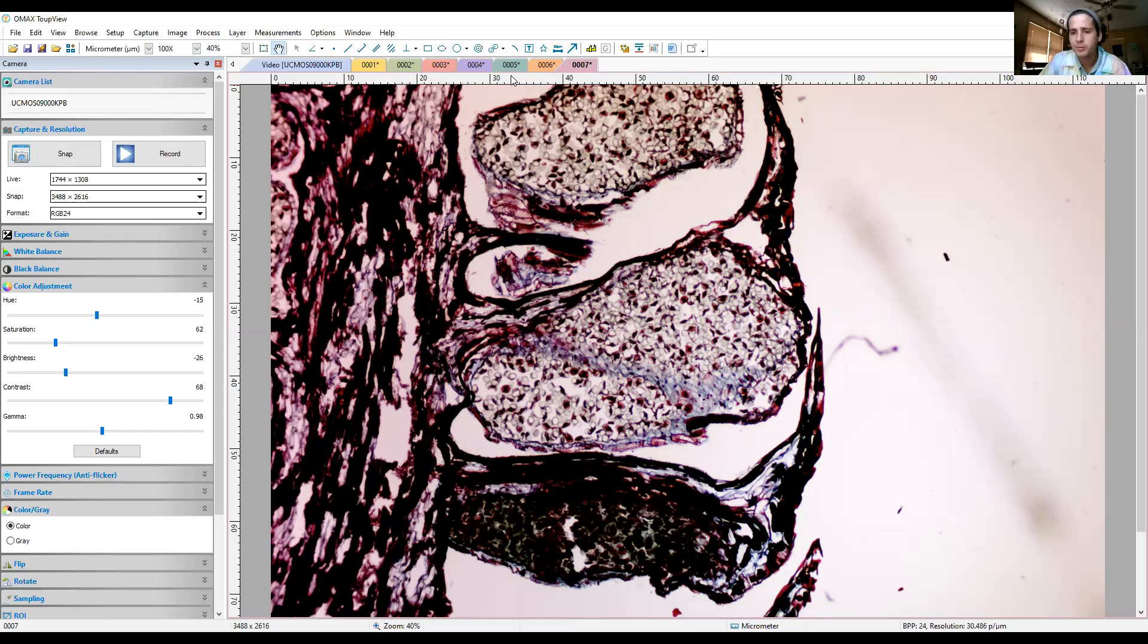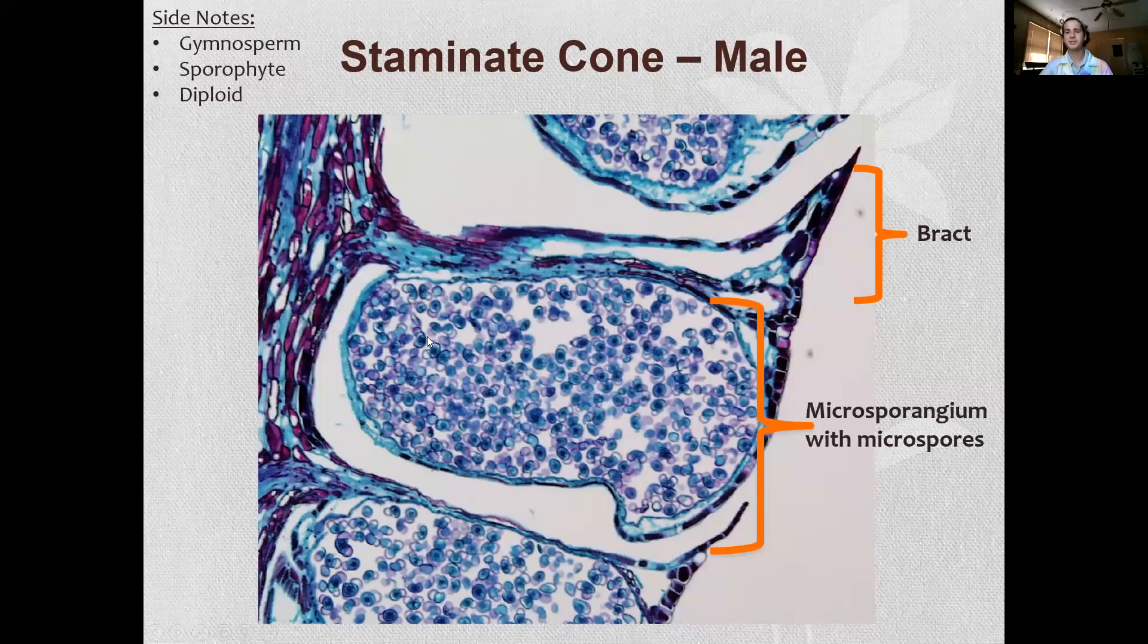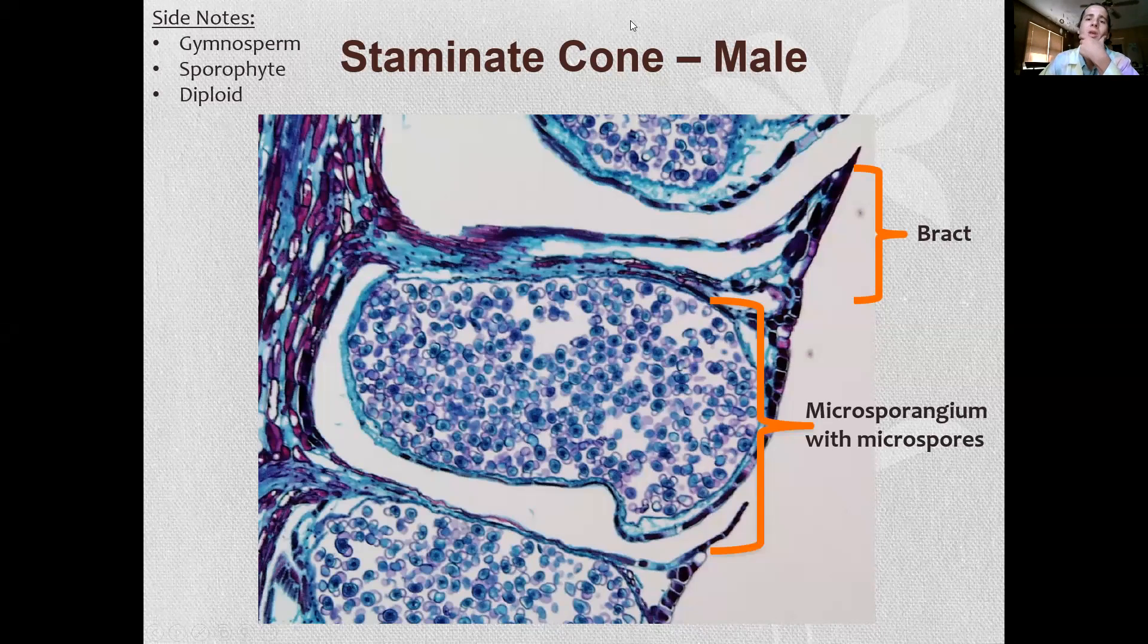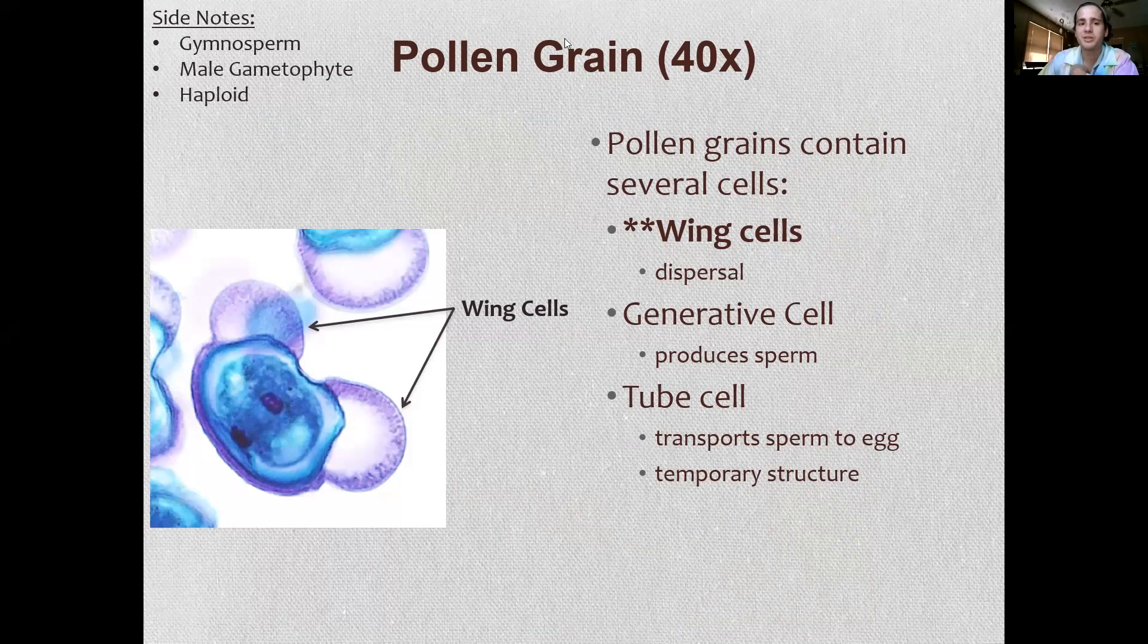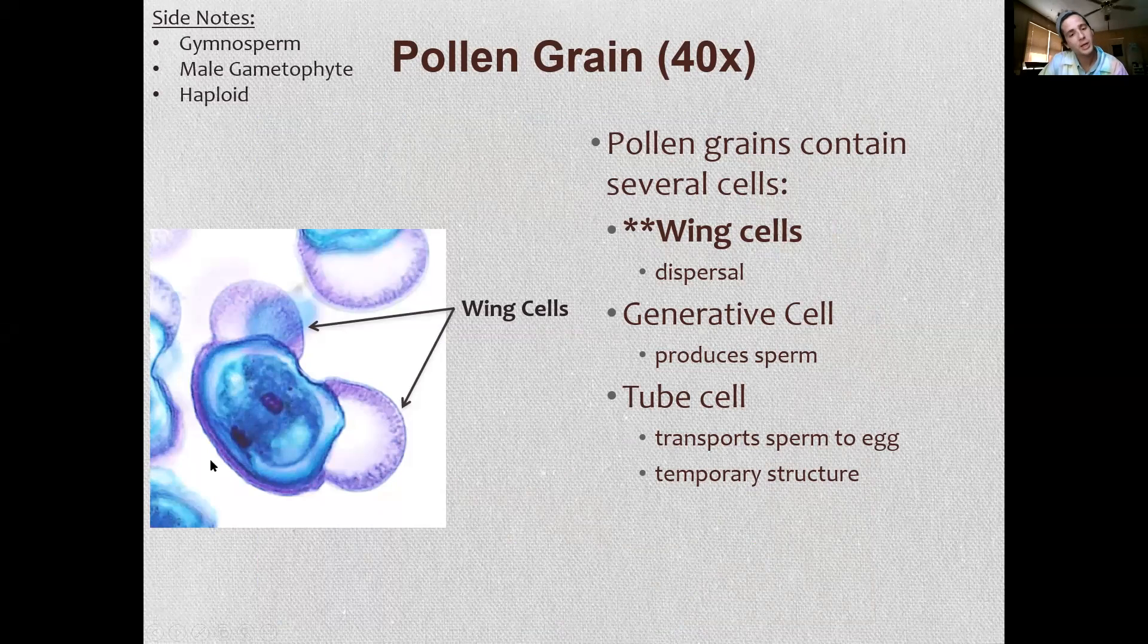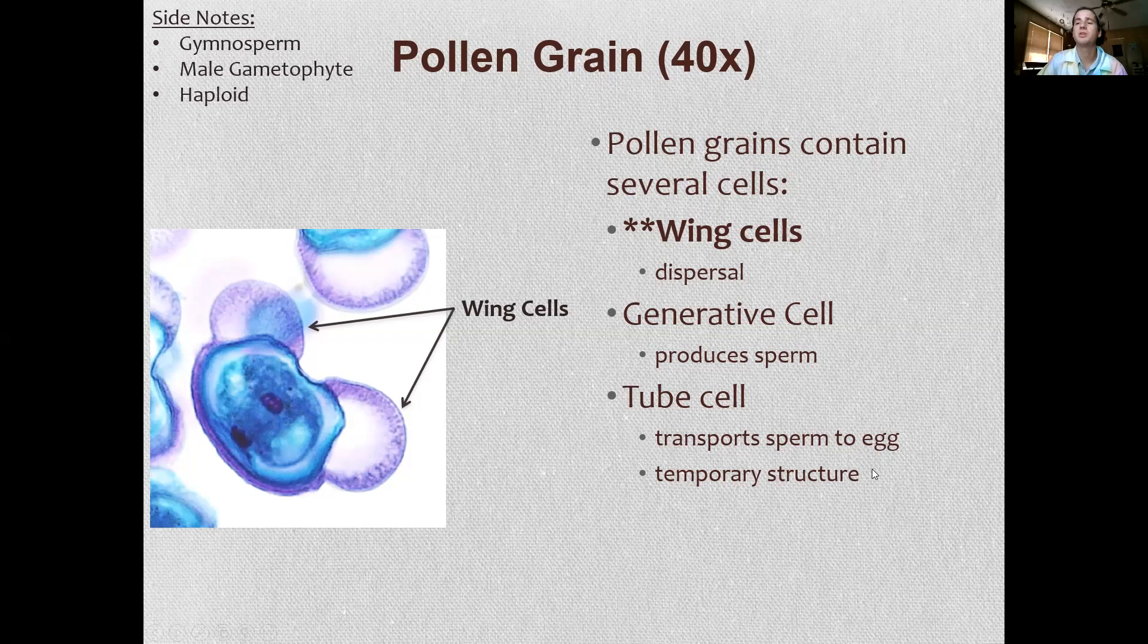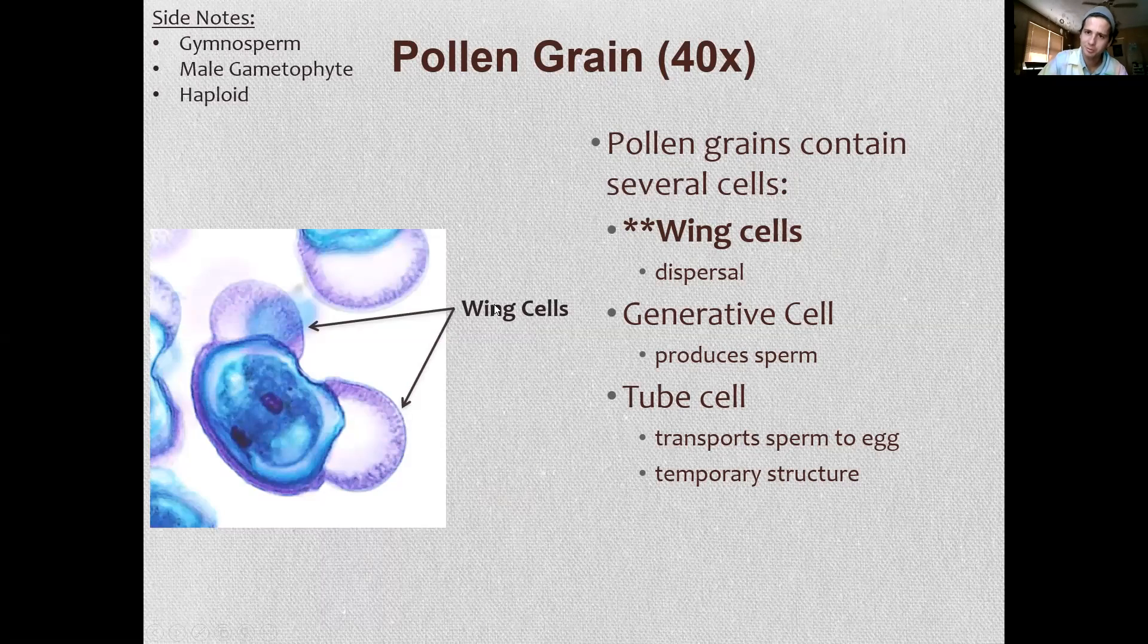Let's go back to our PowerPoint. So next up, let's look at some pollen. Again, produced by the males, this is after they have undergone some mitosis to produce these wing cells. And later on they're going to undergo some more mitosis to produce a tube cell and your sperm. Your tube cell kind of looks like a little Dumbo trunk coming out of this end and it transports the sperm to the egg once they've landed nearby the egg.